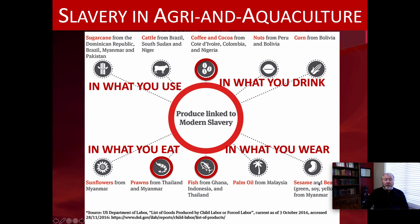Slavery in agriculture and aquaculture are huge. Nuts from sugarcane and cattle from Brazil, South Sudan, and Niger. Coffee and cocoa from the Ivory Coast, from Colombia, from Nigeria. Nuts from Peru and Bolivia. Corn from Bolivia. That's in what you drink, what you eat, what you wear. Sunflowers from Myanmar. Prawns from Thailand and Myanmar. Fish from Ghana, Indonesia, and Thailand. Palm oil from Malaysia. Sesame and beans from Myanmar — so many things.